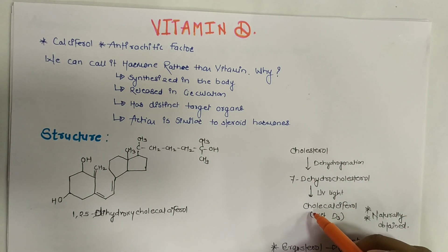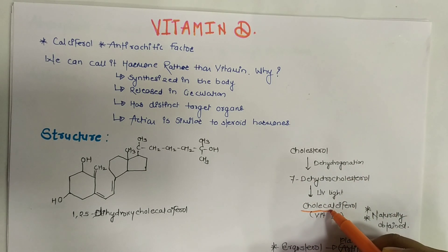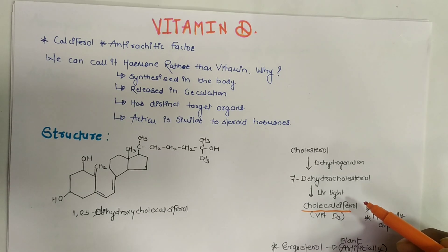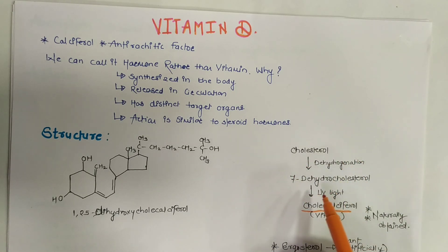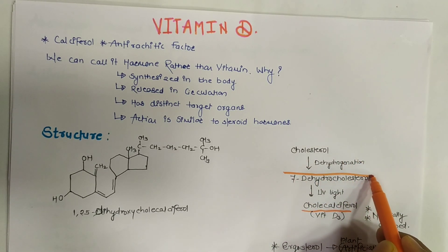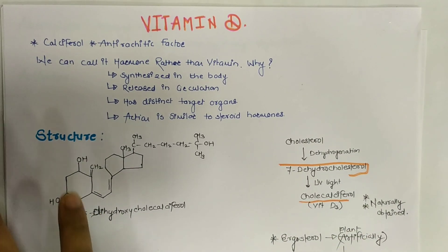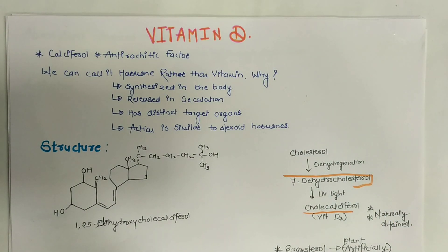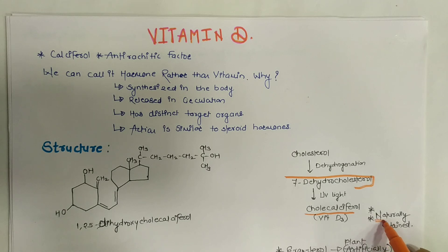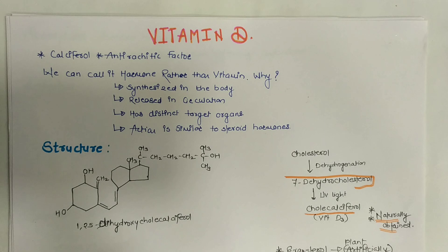Naturally produced vitamin D3, or cholecalciferol, is formed when cholesterol is dehydrogenated to form 7-dehydrocholesterol. On absorption of UV light or sunlight, it is converted into cholecalciferol, vitamin D3 — this is the naturally obtained form of vitamin D. Vitamin D can also be obtained artificially from the plant sterol known as ergosterol.